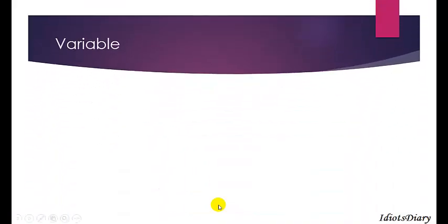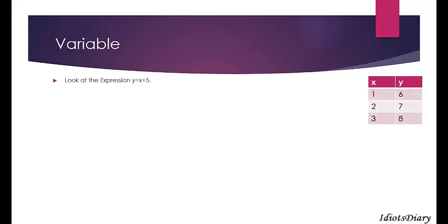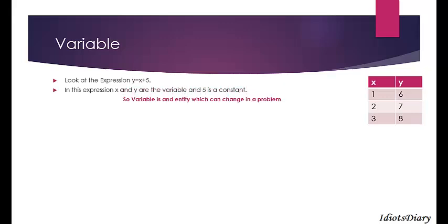Next, we will discuss about variables. In the expression y = x + 5, if x is 1 then y becomes 6; if x is 2 then y becomes 7; if x is 3 then y becomes 8. Since x and y change, they are called variables. A variable is an entity which can change during a program or problem. When a variable is created in a program, C reserves a memory space and gives it a name. The memory map for x is shown in the figure.